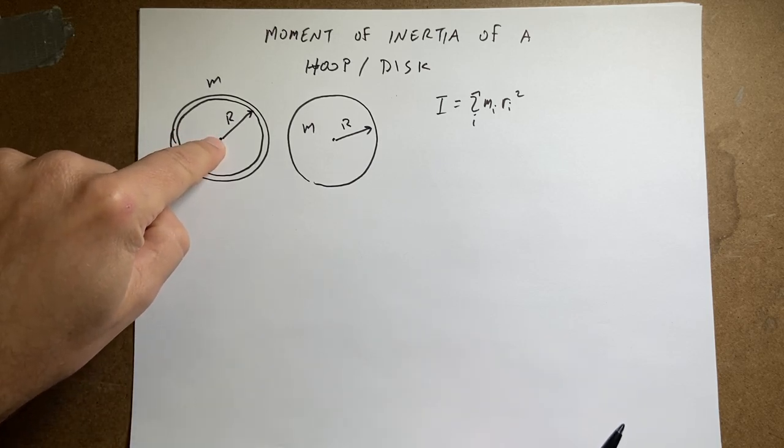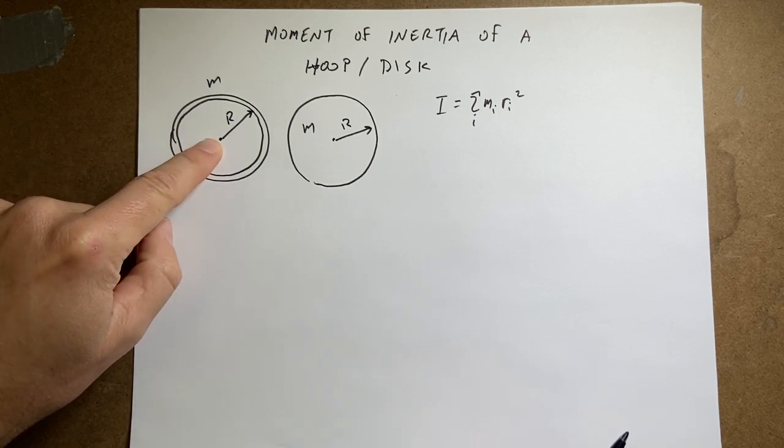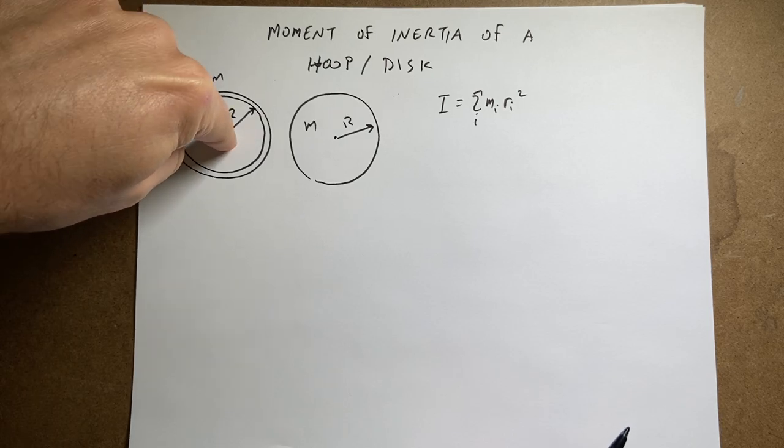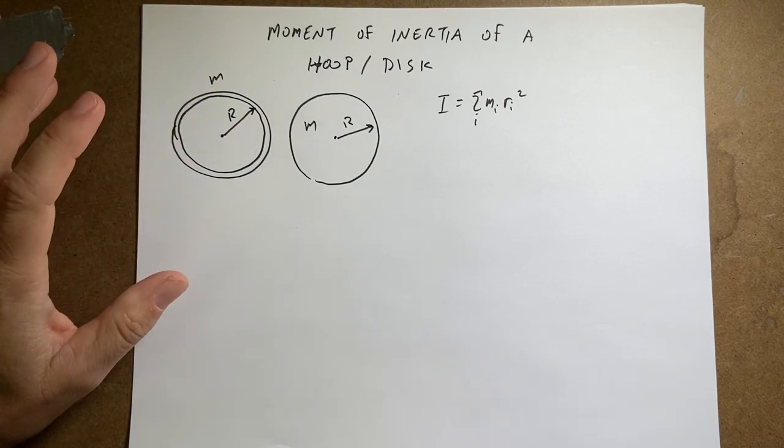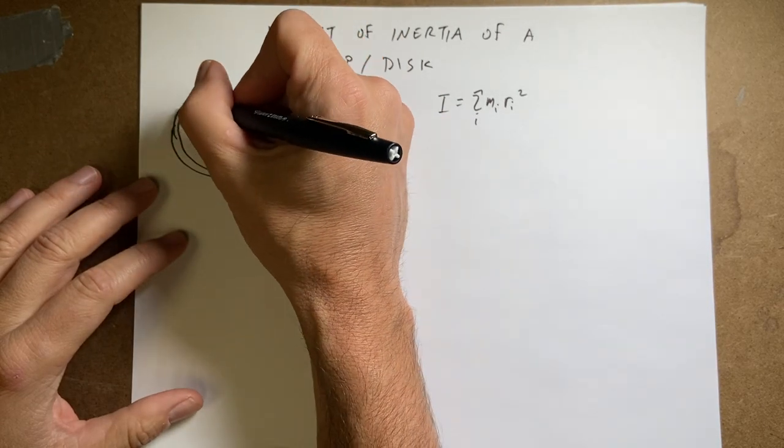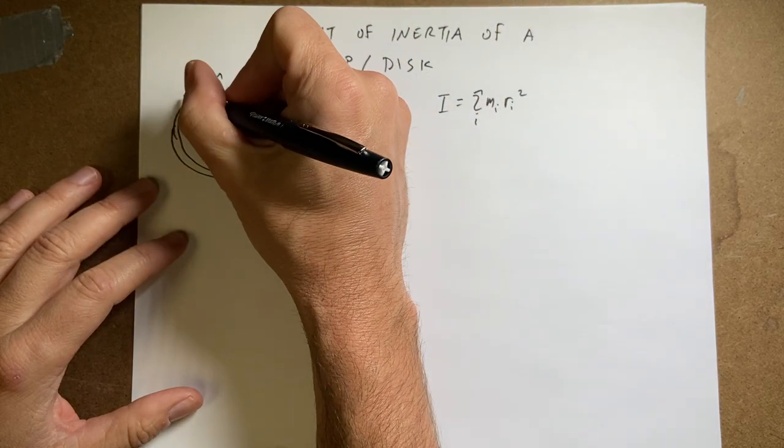So let's start with the hoop. Here's a hoop. It has a radius r and a mass m. And I'm rotating it about an axis through the center. I should have said that if I didn't. So let's break this like we did before. I'm going to break this into little pieces dm.